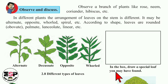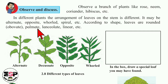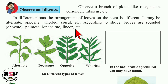In this box, draw a special leaf you may have found. Now, according to shape, leaves are rounded — oval shape. Palmate means in the shape of our palm. Lanceolate means in the shape of a spear's pointed end. And linear means straight. These are the various shapes of leaves we can observe.